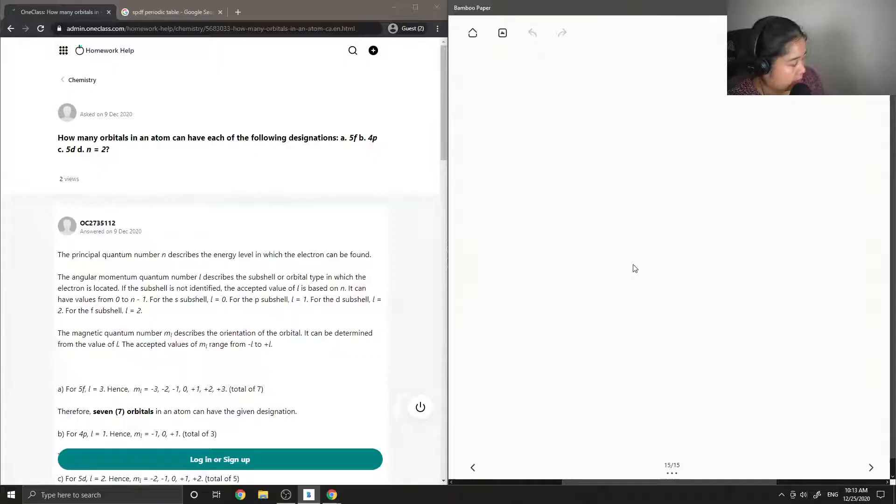Okay, so question number seven: how many orbitals in an atom can have each of the following designations? a) 5f, b) 4p, c) 5d, d) n equals two.